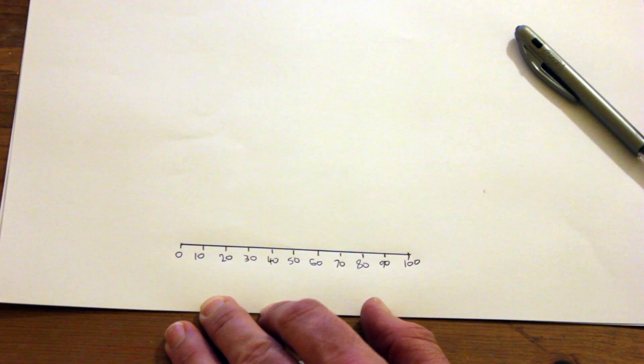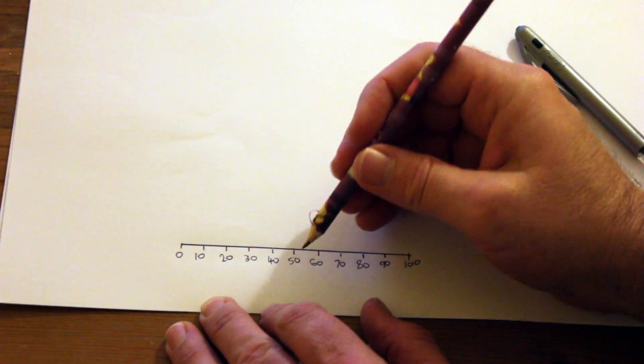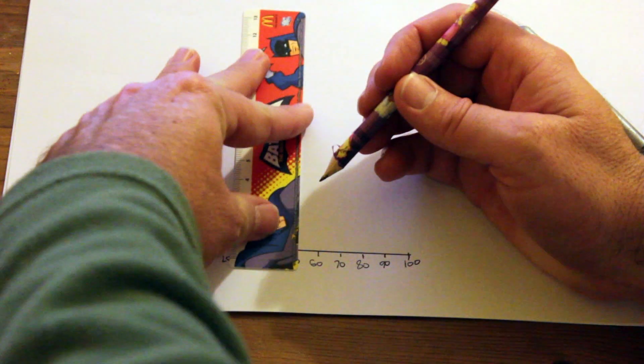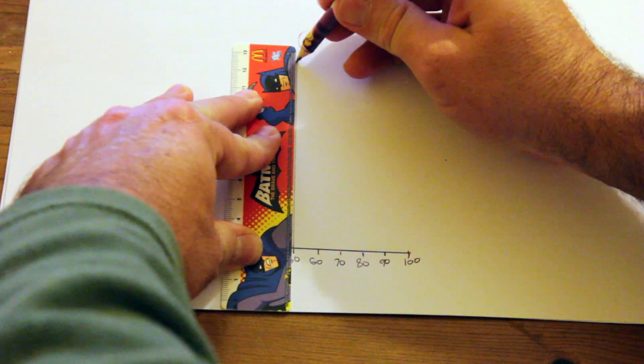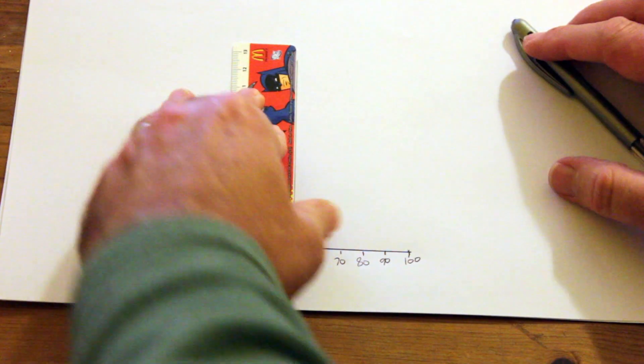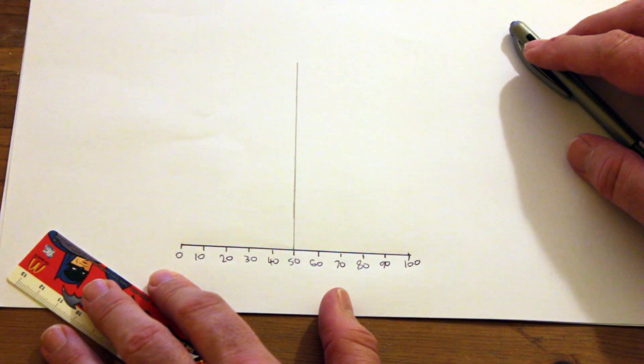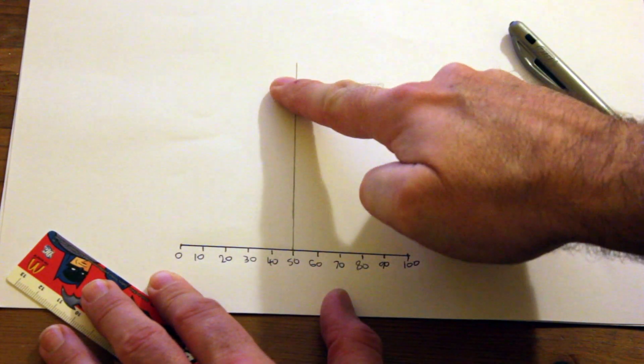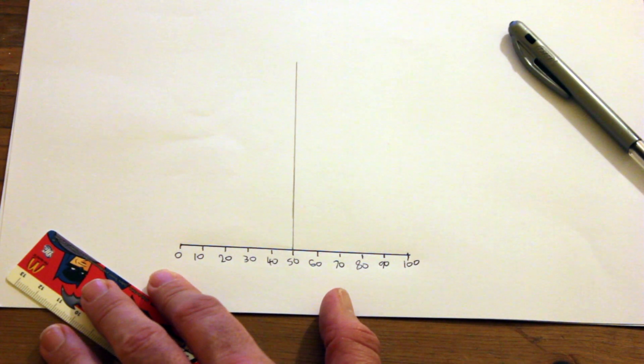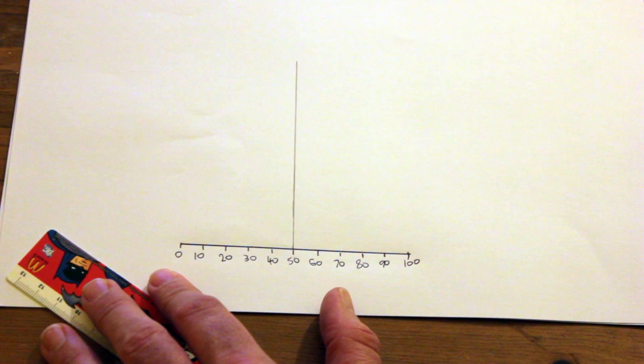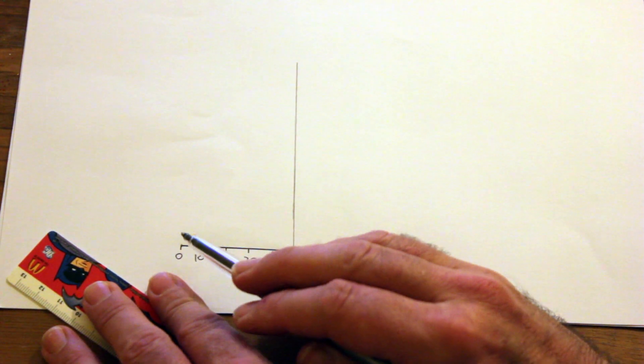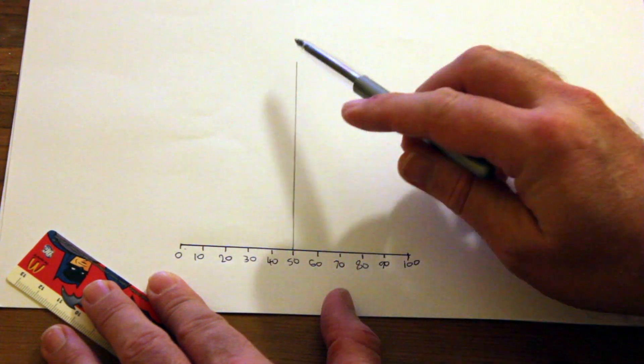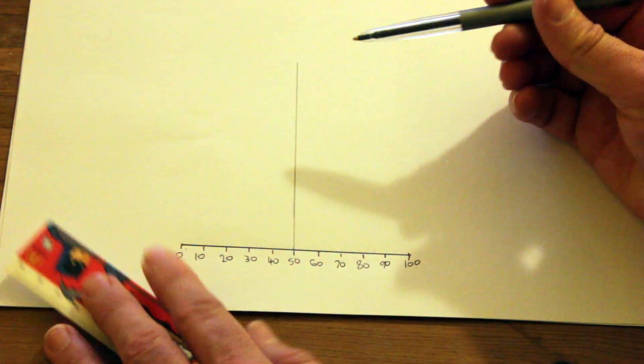Now when we've done this we are going to draw a vertical line from the 50 percent mark here straight up the page. We're going to rub this line out later. The purpose of this line is it's going to help us join our other two 10 centimeter lines. Now I'm going to draw two 10 centimeter lines which are going to run from the zero percent and 100 percent marks off the horizontal axis until they meet on this vertical line.